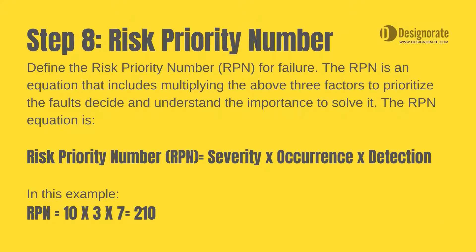Step 8: Risk priority number. Define the risk priority number for the failure. The RPN is an equation that includes multiplying the above three factors to prioritize the faults and understand the importance of solving it. The RPN equation is: Risk Priority Number (RPN) equals Severity × Occurrence × Detection. In this example, RPN equals 10 × 3 × 7 = 210.